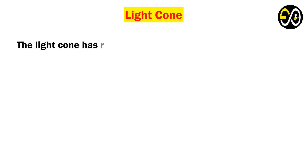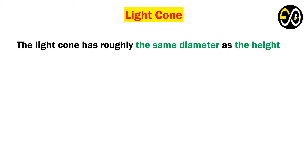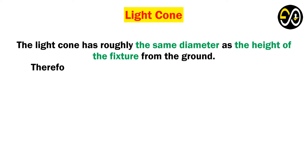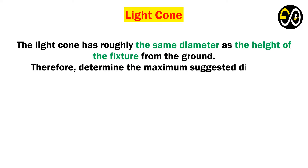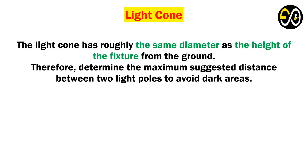The light cone has roughly the same diameter as the height of the fixture from the ground. Therefore, this determines the maximum suggested distance between two light poles to avoid dark areas.